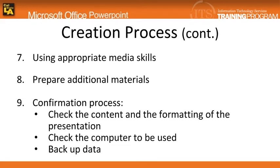As Murphy's Law states, anything that can go wrong will go wrong. Therefore, the confirmation process will ensure that the presentation is complete and accurate. In checking the content and formatting: first, make sure the purpose and goal of the presentation are clearly stated; second, ensure all necessary content is covered; third, make sure the formatting is consistent and correct; fourth, make sure animations and special effects are not excessively applied; fifth, use spelling and grammar check to ensure the presentation is free of errors.